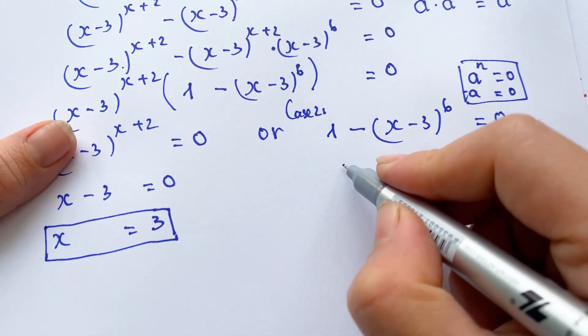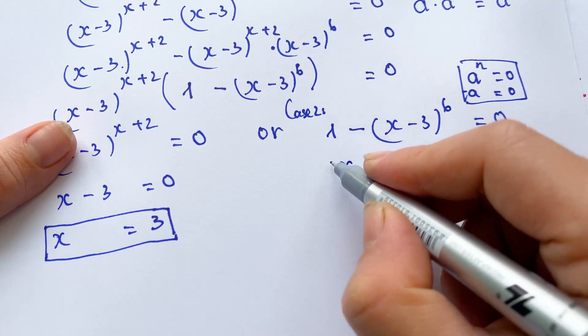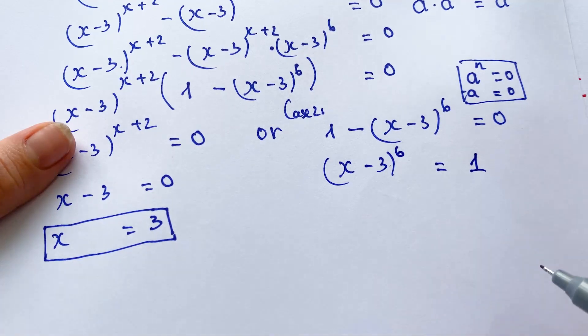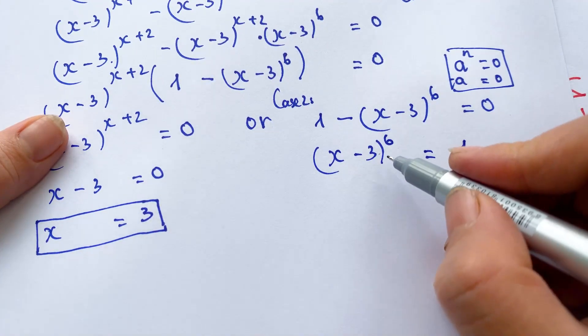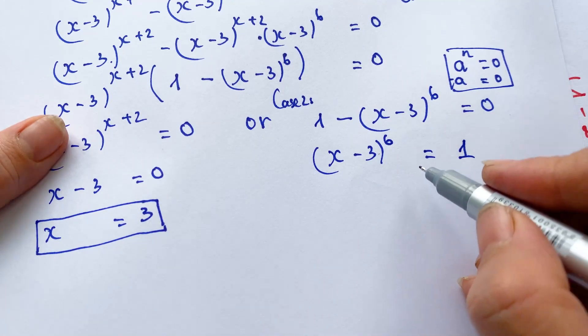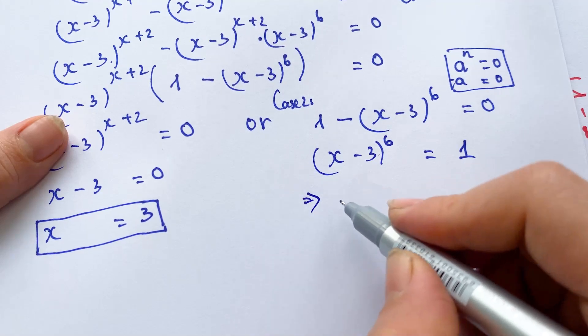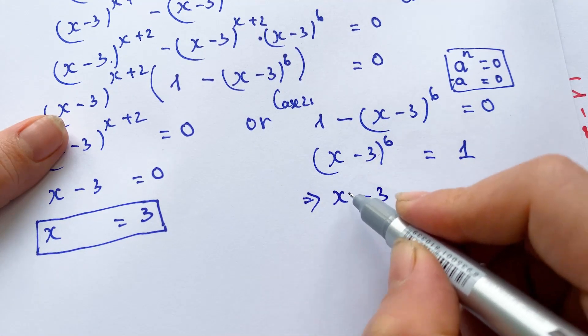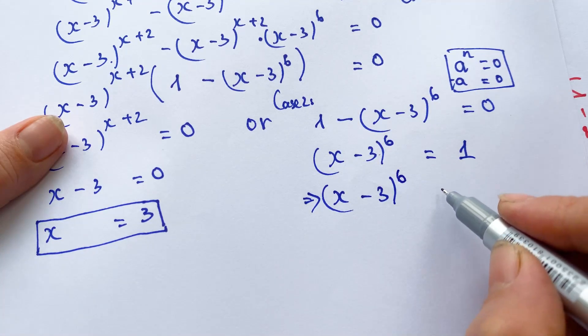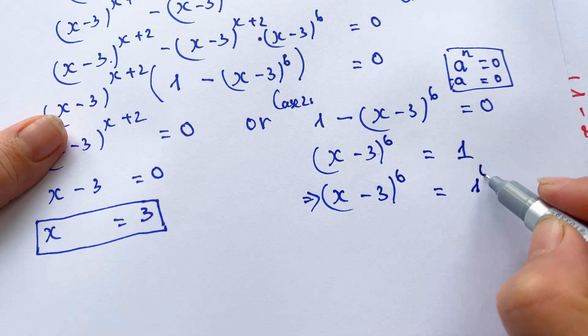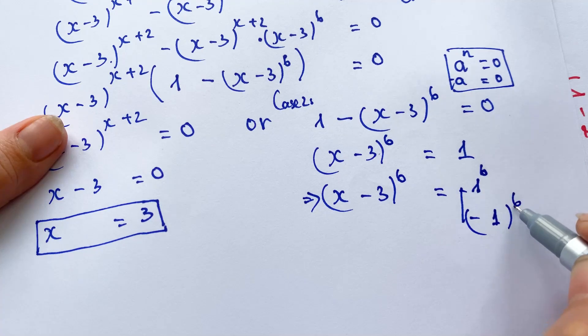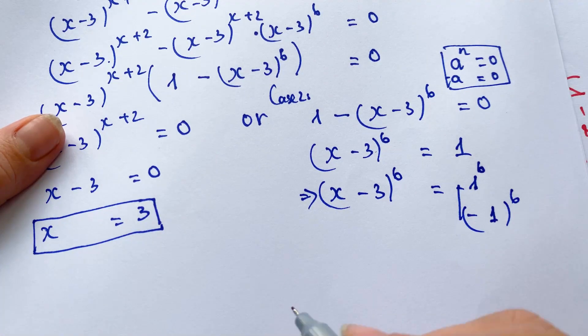So, for case 2, we can write (x-3)^6 equals 1. Because, everyone can see, 6 is the even number. Therefore, we can have (x-3)^6 equals 1^6, or equals (-1)^6.